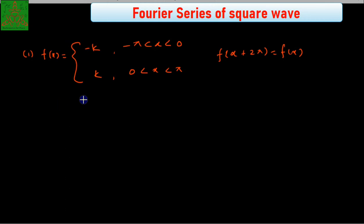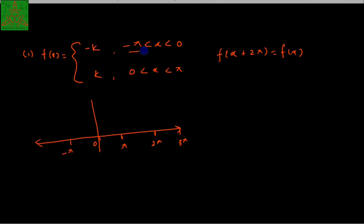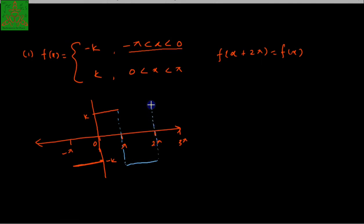Let us try to see what the graph of this function looks like. If this is 0, this will be pi and this is minus pi. Here it is 2 pi, 3 pi and so on. In the interval minus pi to 0 it has minus k value, and in the interval 0 to pi this is k. It is a periodic function, so the graph extends periodically. This is known as the square wave.